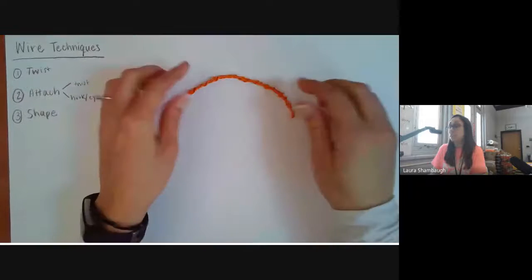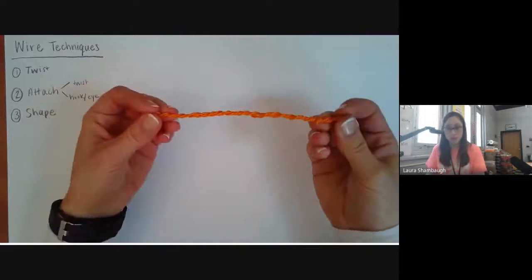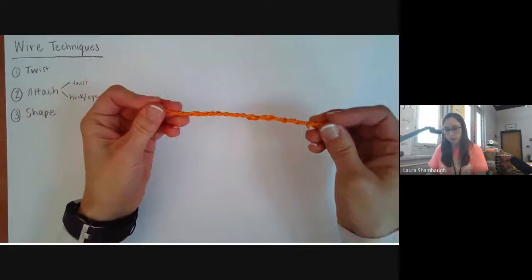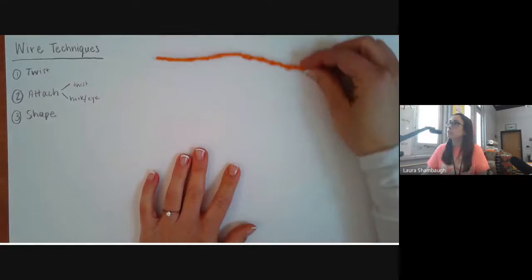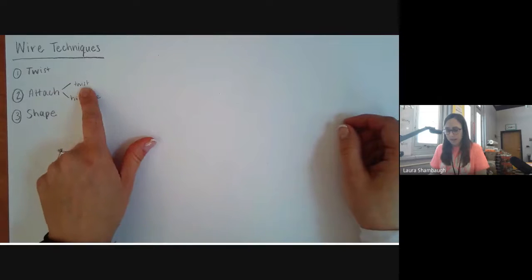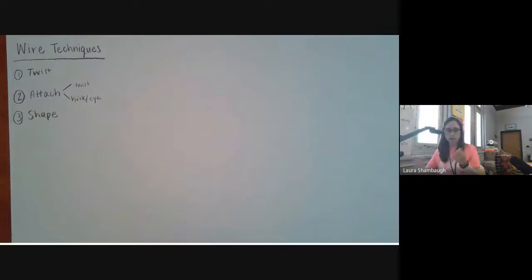If you bend it into a certain shape, it's going to really stay that way. In addition to twisting the wire, you can always braid the wire which looks really great and also makes it more durable. That is the first technique: twisting.